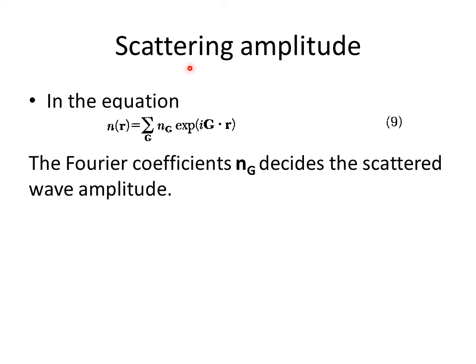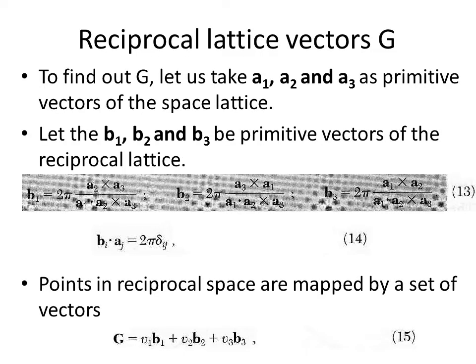We proceed to find out the scattered wave amplitude. This is the representation of electron number density as a Fourier series: the Fourier coefficient n_G, where summation is done over all possible G reciprocal lattice vectors available in the system. The electron number density equals the summation of n_G times exponential i·G·r, where G is the reciprocal lattice vector. The Fourier coefficient n(G) decides the scattered wave amplitude.